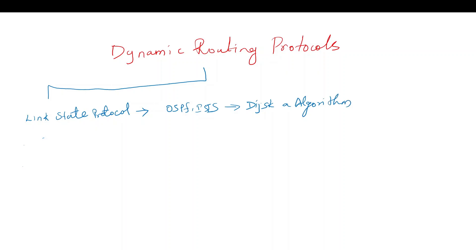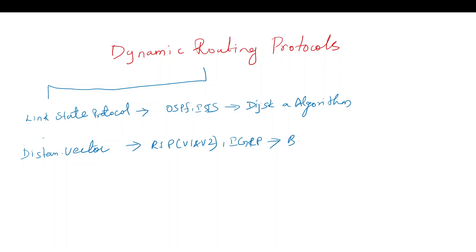We will talk about distance vector protocols. The distance vector protocols include RIP — version 1 and version 2 — and IGRP. The algorithm used by distance vector protocols is the Bellman-Ford algorithm.